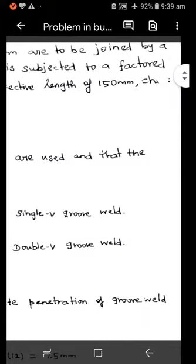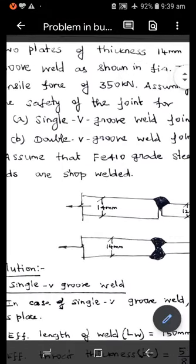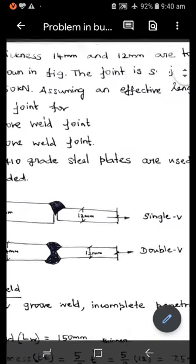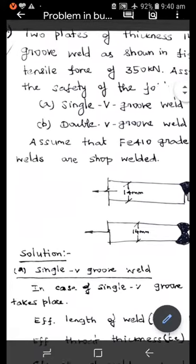The joint is subjected to a factored tensile force of 350 kilo Newton. Assuming an effective length of 150 mm, check the safety of the joint for A,